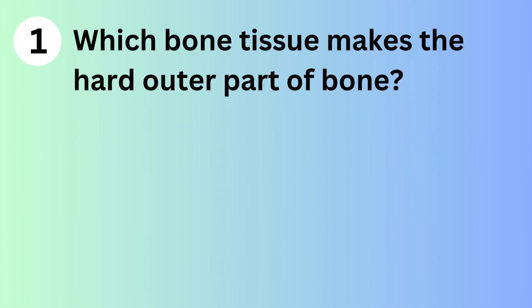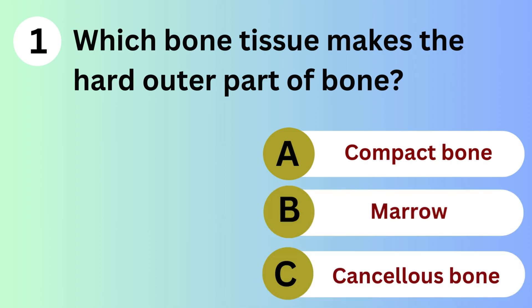Which bone tissue makes the hard outer part of bone? A. Compact bone. B. Marrow. C. Cancellous bone.